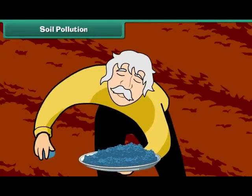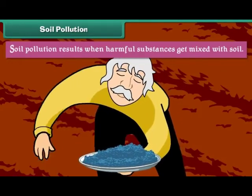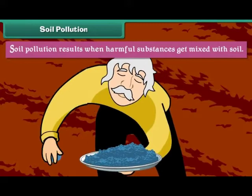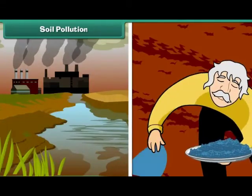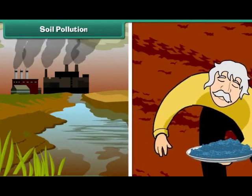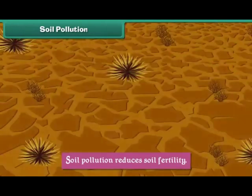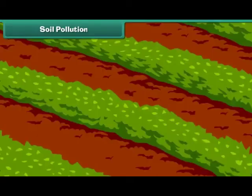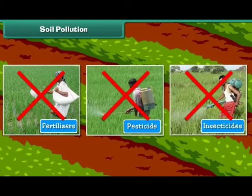Soil Pollution. Soil pollution results when harmful substances get mixed with soil. Industrial waste, fertilizers, pesticides, and insecticides pollute soil. Soil pollution reduces soil fertility. We can prevent soil pollution by reducing usage of fertilizers, pesticides, and insecticides.